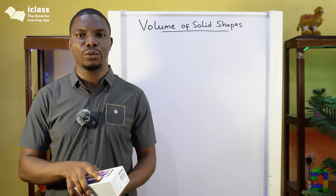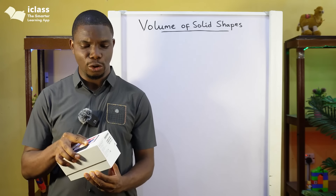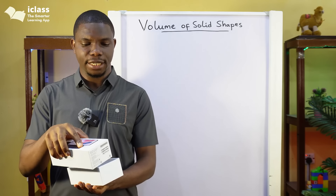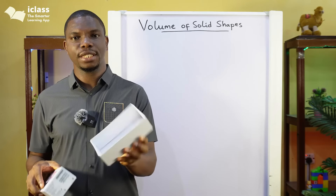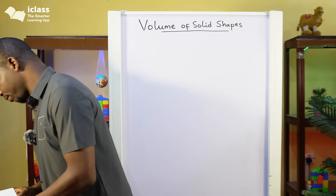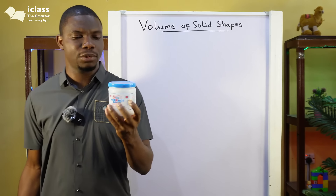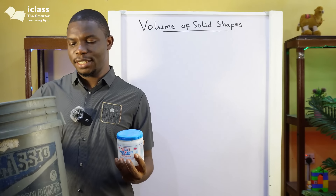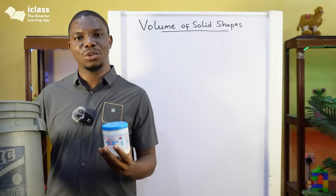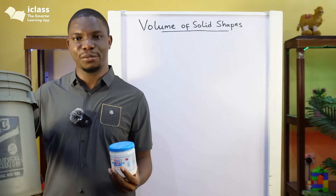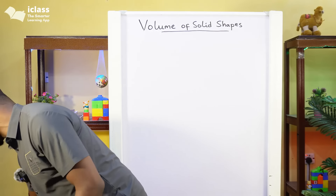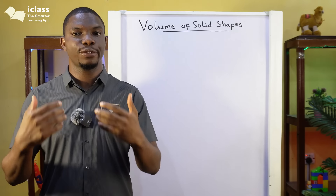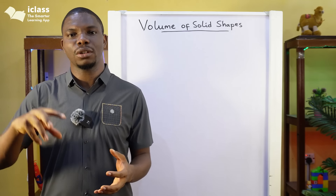The volume of a solid shape is the amount of substance that it can contain. So if I open up this phone case and pour maybe flour in here, the amount of flour that can enter into this phone case is the volume of this phone case. Similarly, if I pour paint into this container, the amount of paint it can contain is the volume of this container. You can see that this larger one will contain far more paint than the smaller one, so we say this has bigger volume than this other one.